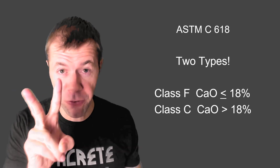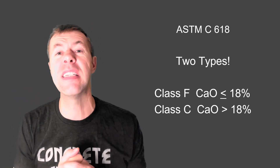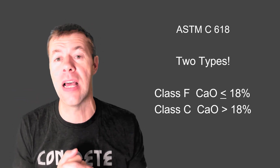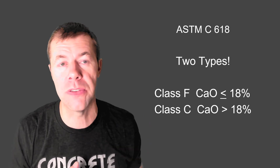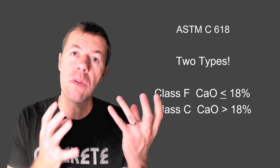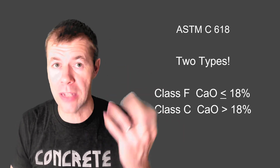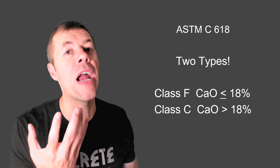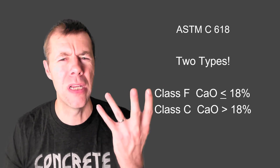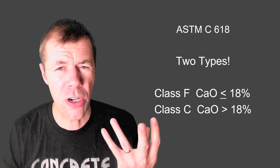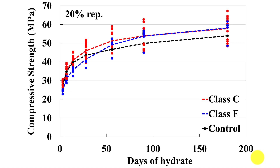Right now there are two types of fly ashes out there — that's what ASTM C618 says — and they're all based on the calcium oxide content. If it's lower than 18%, it's a Class F. If it's higher than 18%, it is a Class C. But does it do a very good job? Let's look at some data.